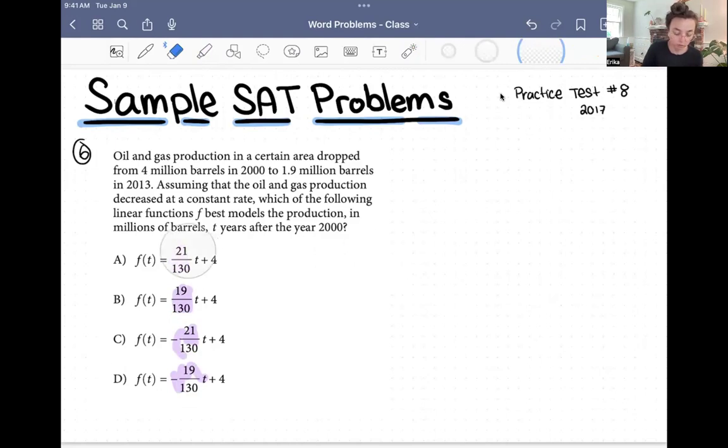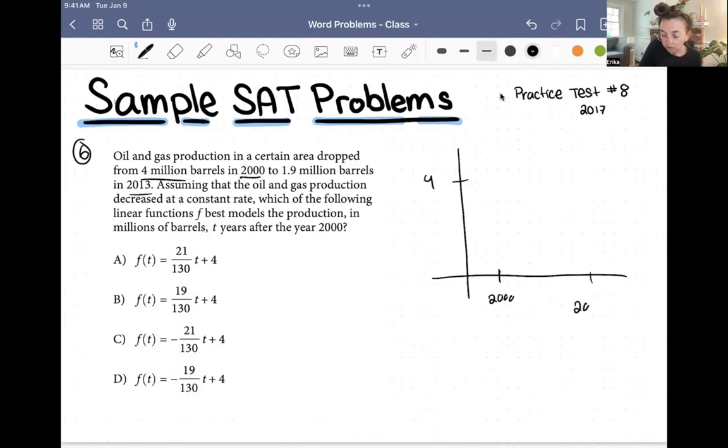So what we are doing here, let me just draw out a little thing just in case so we can see it visually. What we have is in 2000, let's say 2000 is right here, we have made 4 million barrels. So we got 4 mil up here. And then in 2013, let's put that over here, we have made 1.9 million barrels. So the production is going down. So 2000, we're going to put that point up here at 4. In 2013, it's going to be right there. And this is going to be our line. So the function we're looking for is a function that goes with this line.